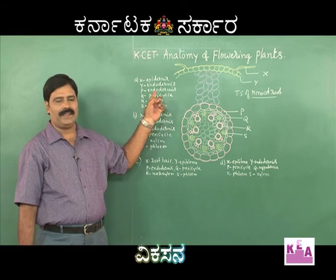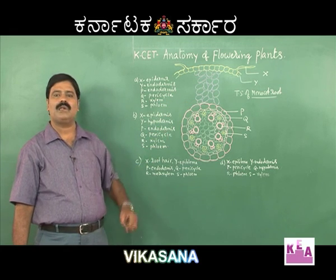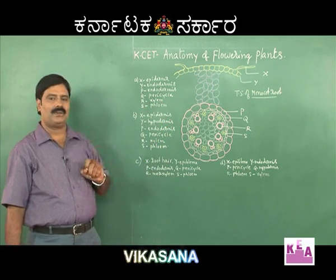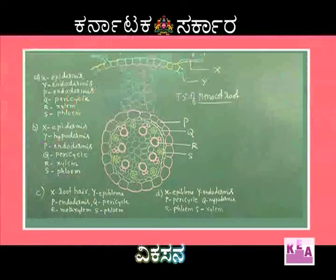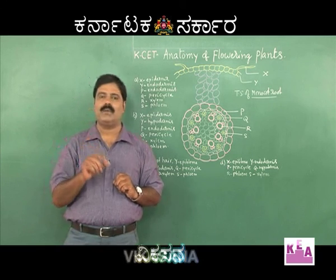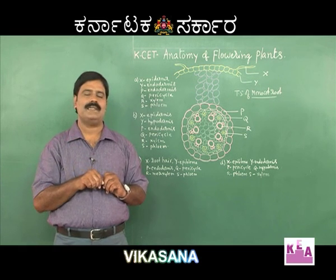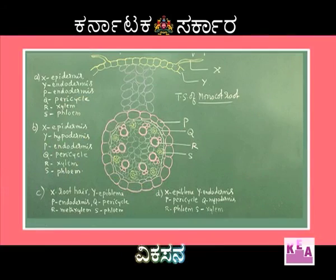Here is a diagram of the TS of a monocot root. There are some specific features to recognize. How do you identify and distinguish that this is a monocot root? The important features of the monocot root are coded in NPT format. The key character is the arrangement of vascular bundles, which are in a radial type of arrangement.